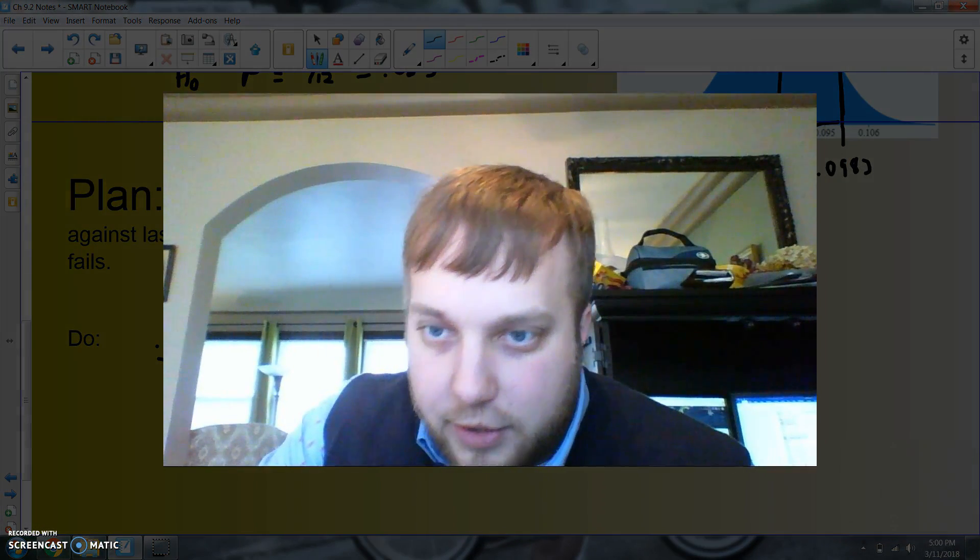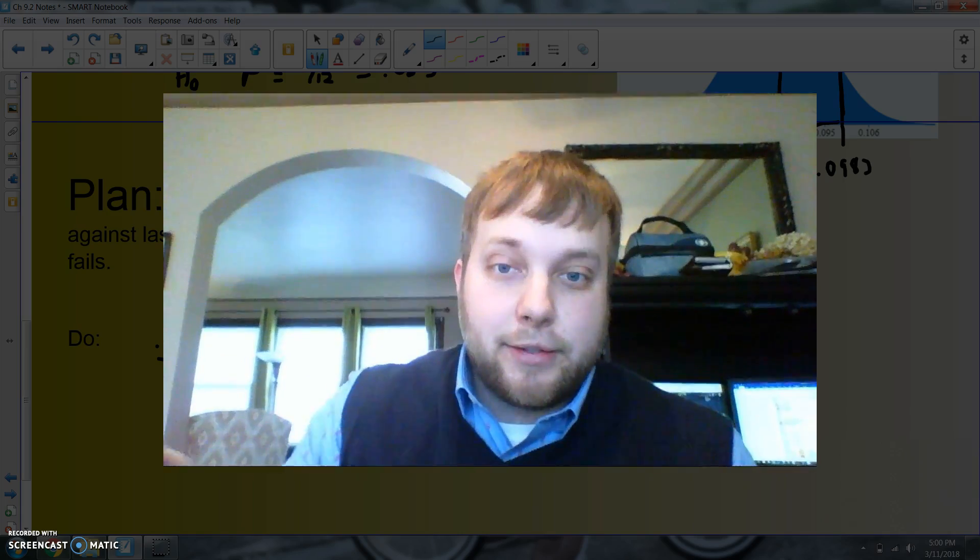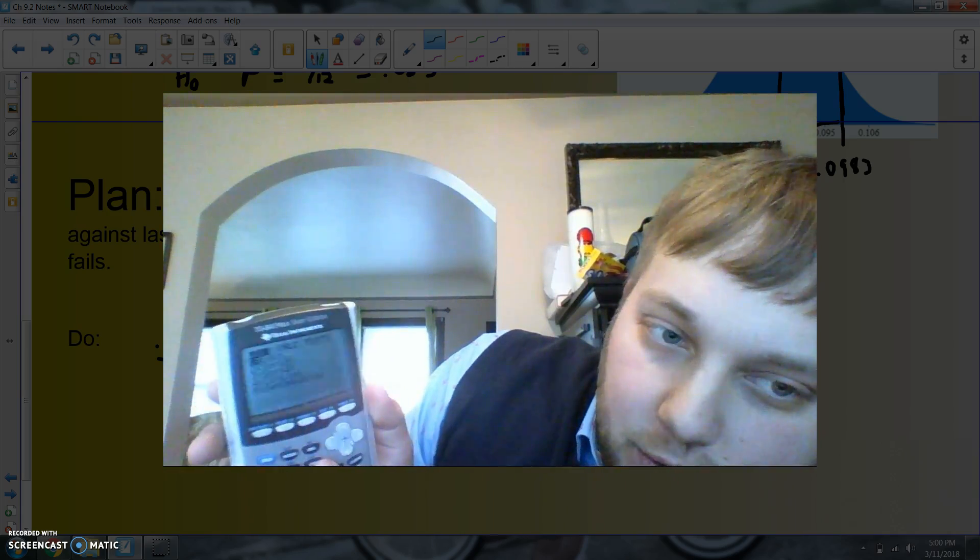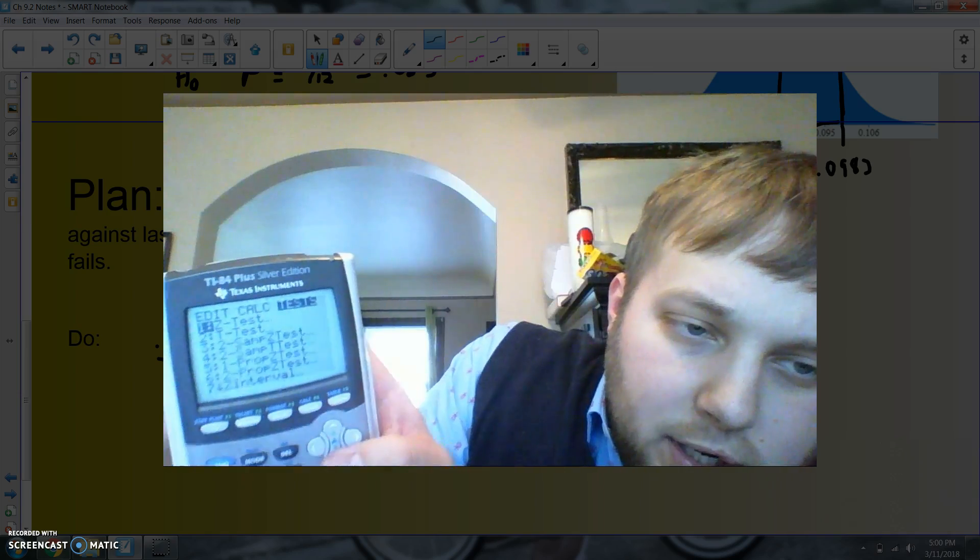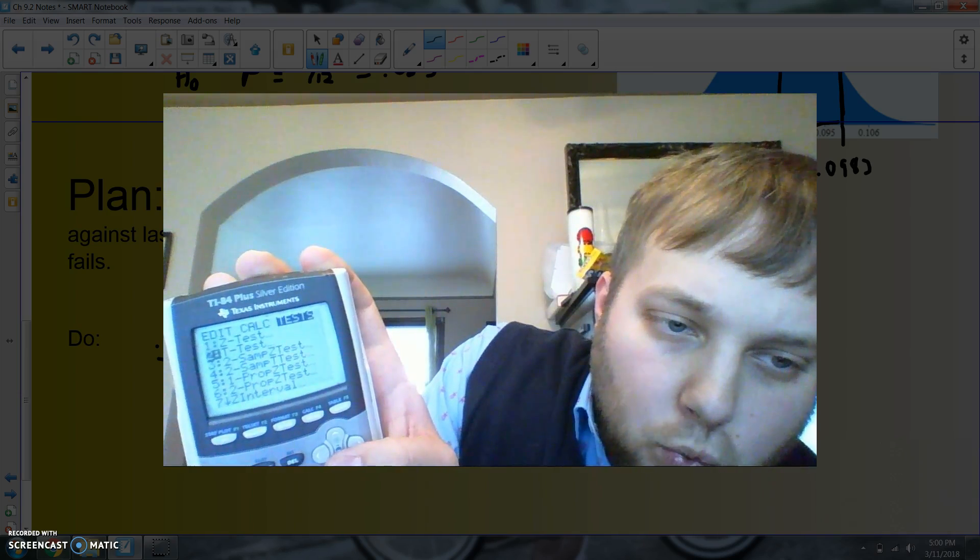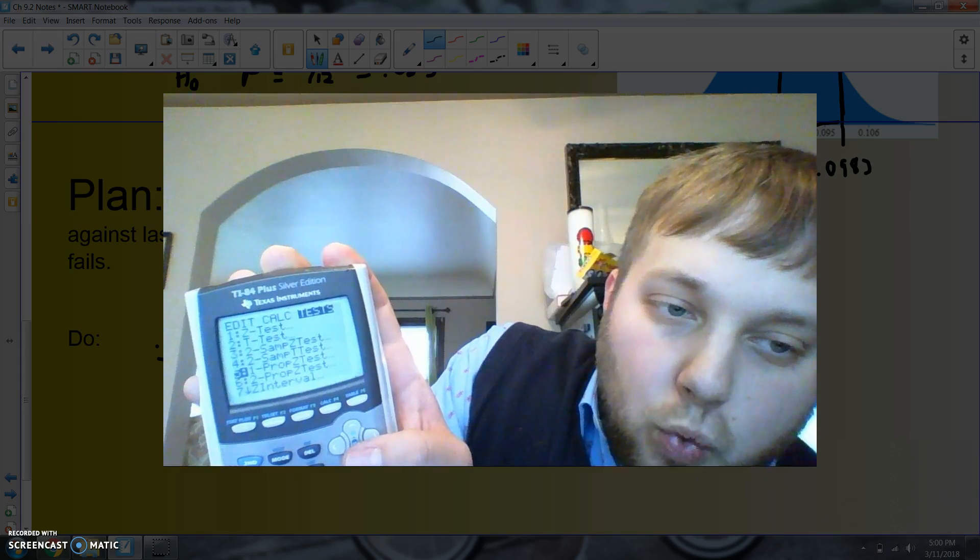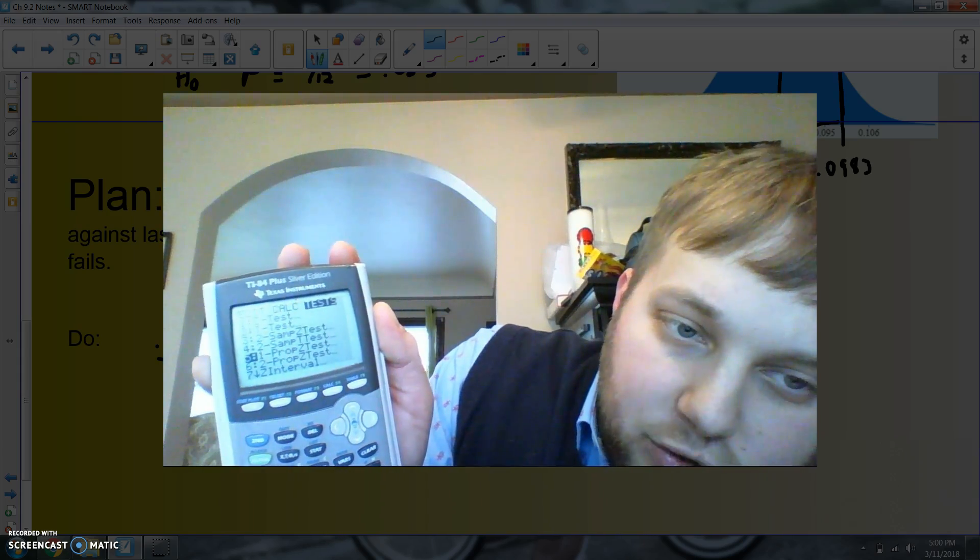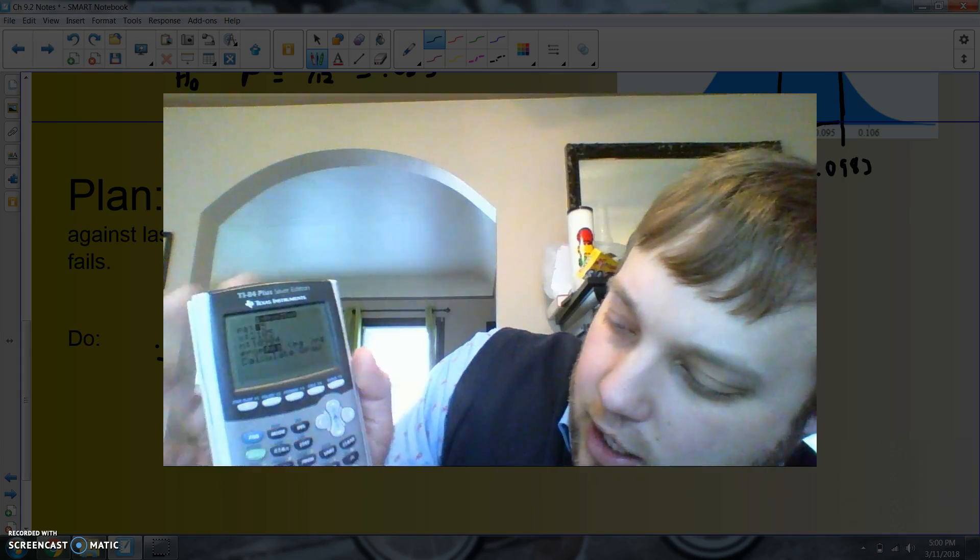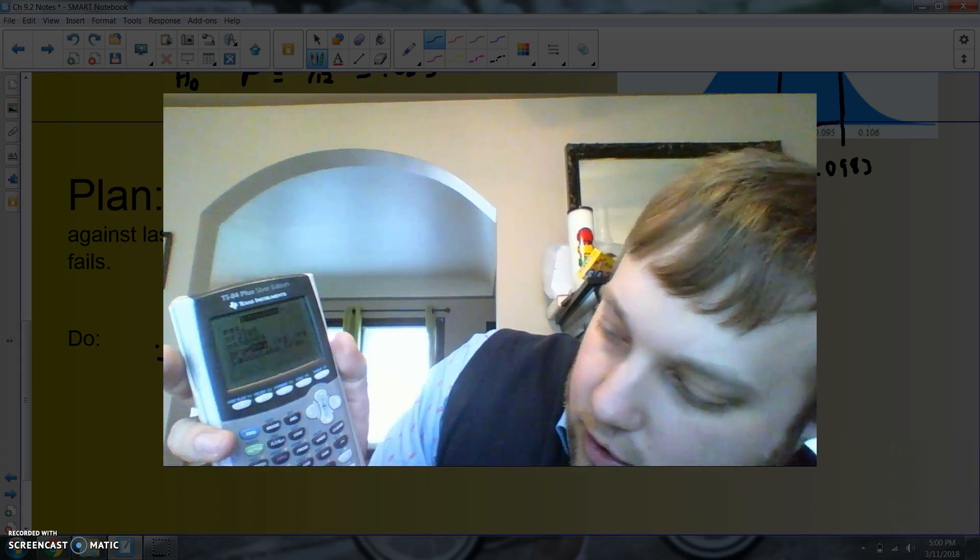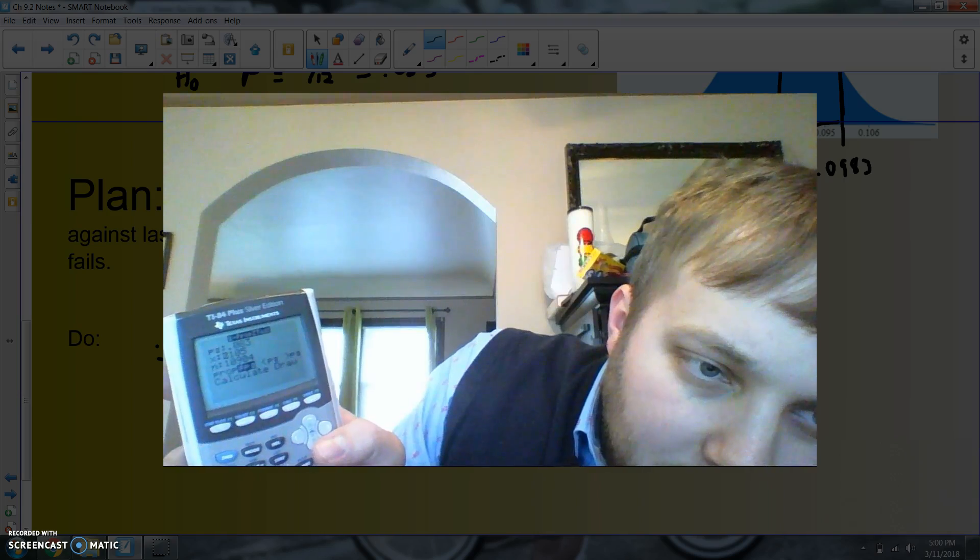Now where can you do this in your calculator? Here's what we're gonna do. We're gonna go to stat, then we're gonna go over to tests, and you're gonna keep going until you see one-proportion z-test. Remember, we're doing proportion, so it's a one-proportion z-test. Proportions only have z-tests; they'll not have t-tests. I'm gonna hit enter. My p0 is 0.083.